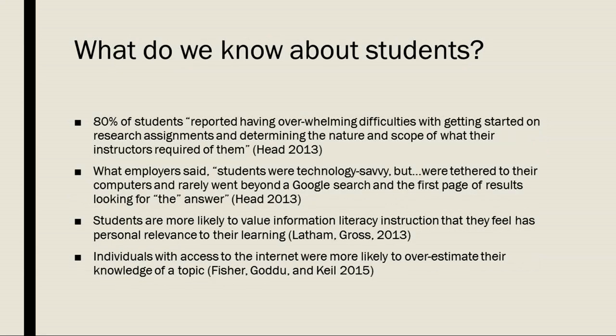Knowing a bit about where students are coming from with regards to information literacy can also be helpful. In research from 2013, 80% of students reported having overwhelming difficulties with getting started on research assignments and determining the nature and scope of what their instructors required of them. You can only imagine that issue has been exacerbated with the rate of information growth and sharing that happens today.